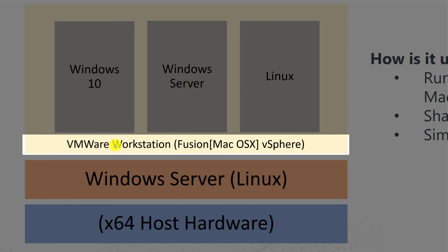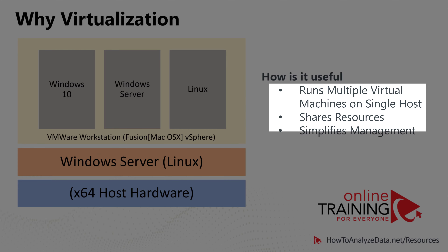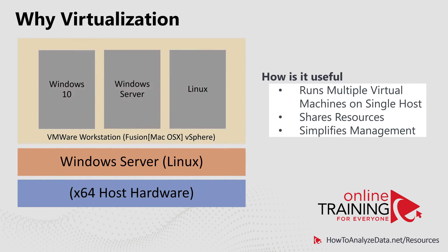For your virtualization software, you can use VMware Workstation. If you're running on a Mac, you can use VMware Fusion. In a corporate server environment, you can use VMware vSphere. The main reason companies choose virtualization is because it saves money — you can run multiple virtual machines on a single host. In the past, you needed dedicated hardware for each machine. Sharing resources on the host saves a lot of money, and simplified administration reduces the number of administrators needed. Movement to the cloud makes it even simpler.